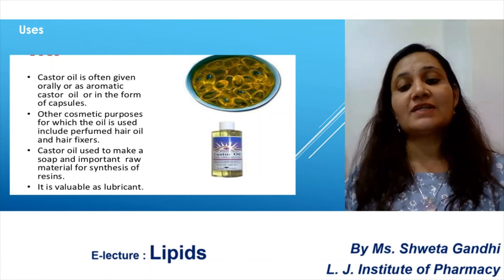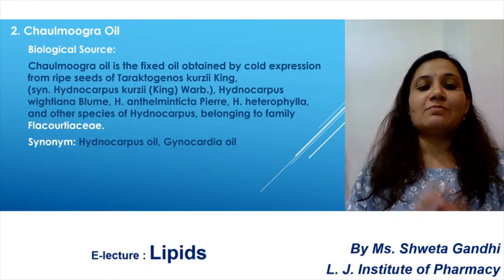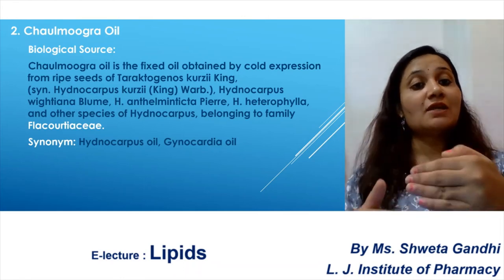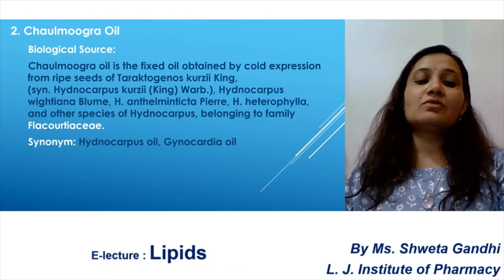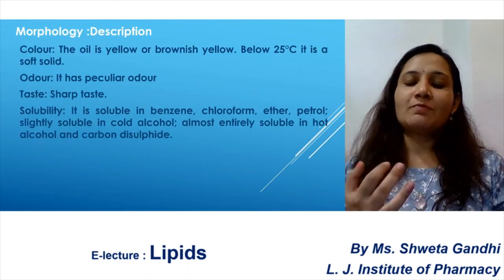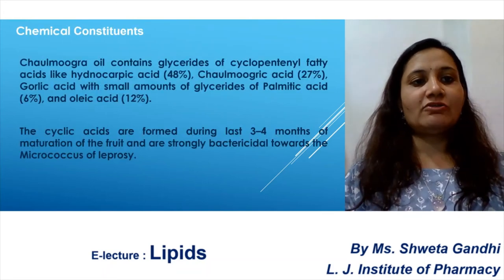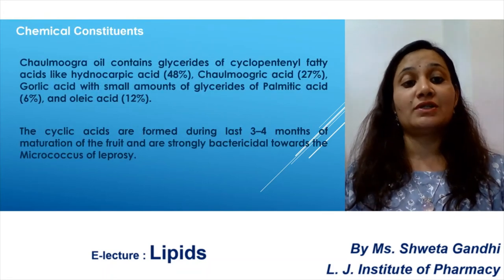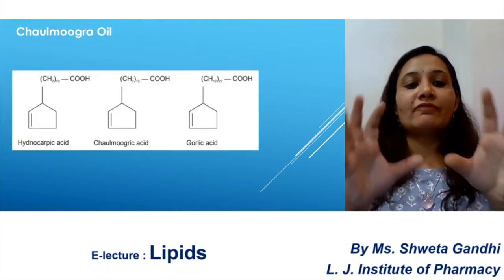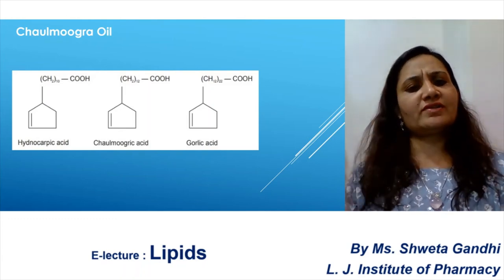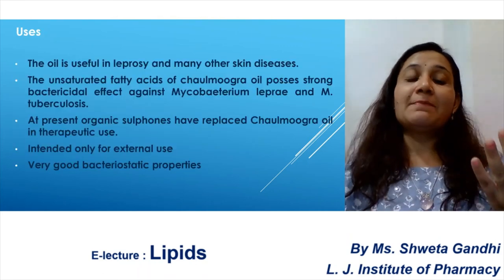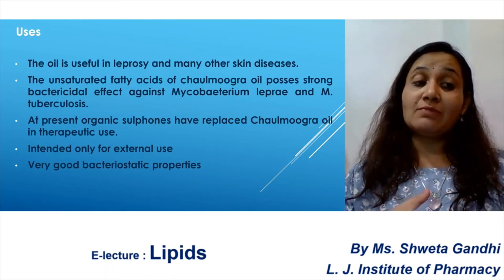The second drug is chalmogra oil, also called hydnocarpus oil or gynocardic oil. Questions may also refer to it as hydnocarpus oil — understand that it is the same as chalmogra oil. Again, biological source, morphology, method of preparation, chemical constituents, and structures — particularly the major constituent — must be studied. Uses include leprosy and skin diseases; it also has bacteriostatic properties and is used for external purposes.